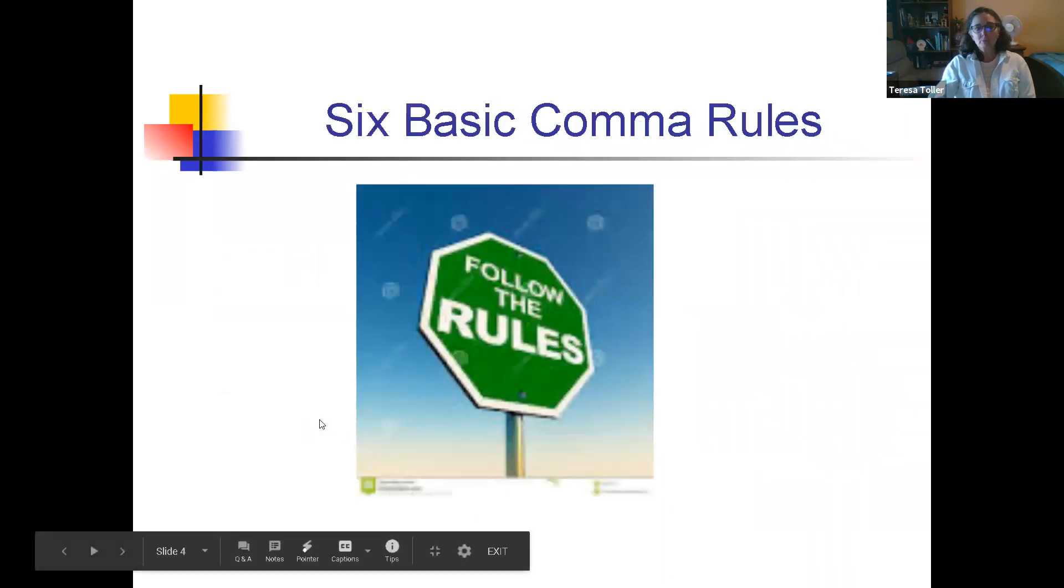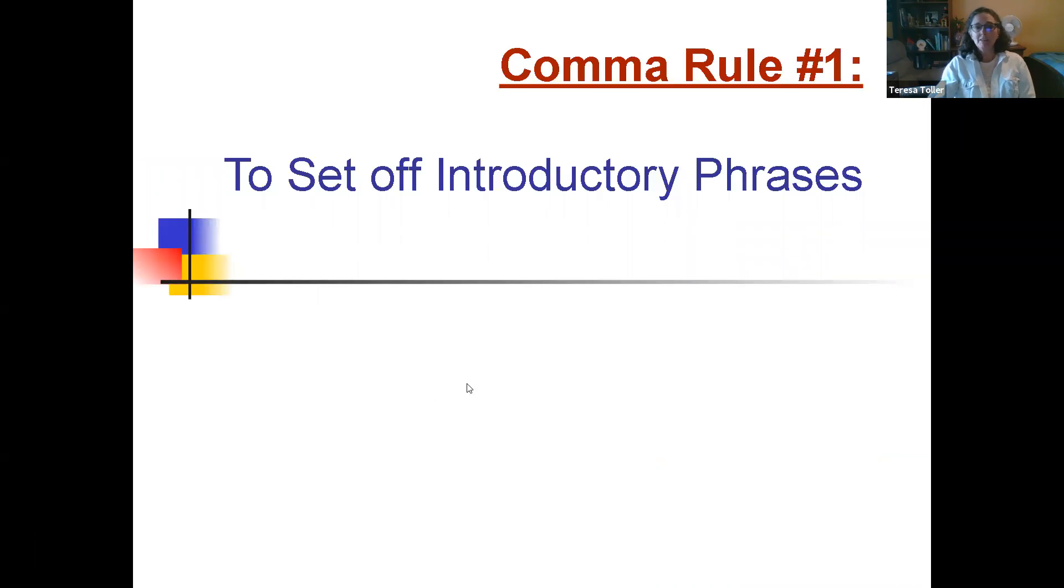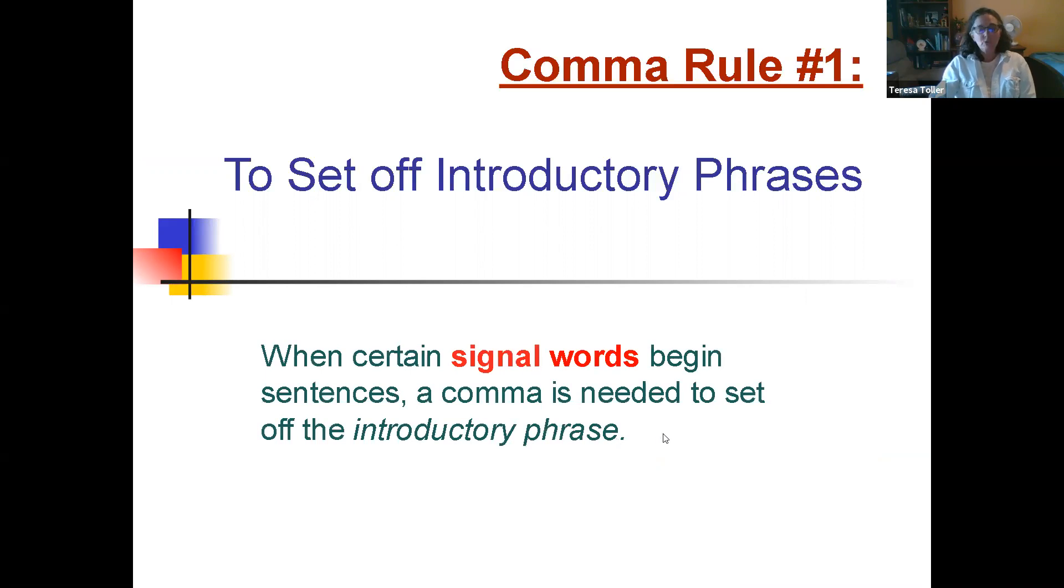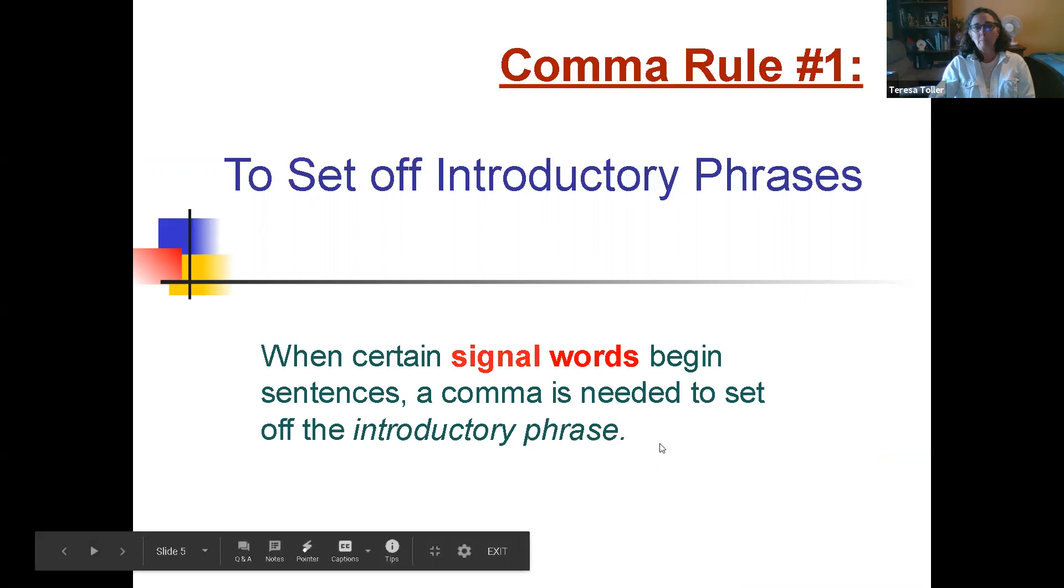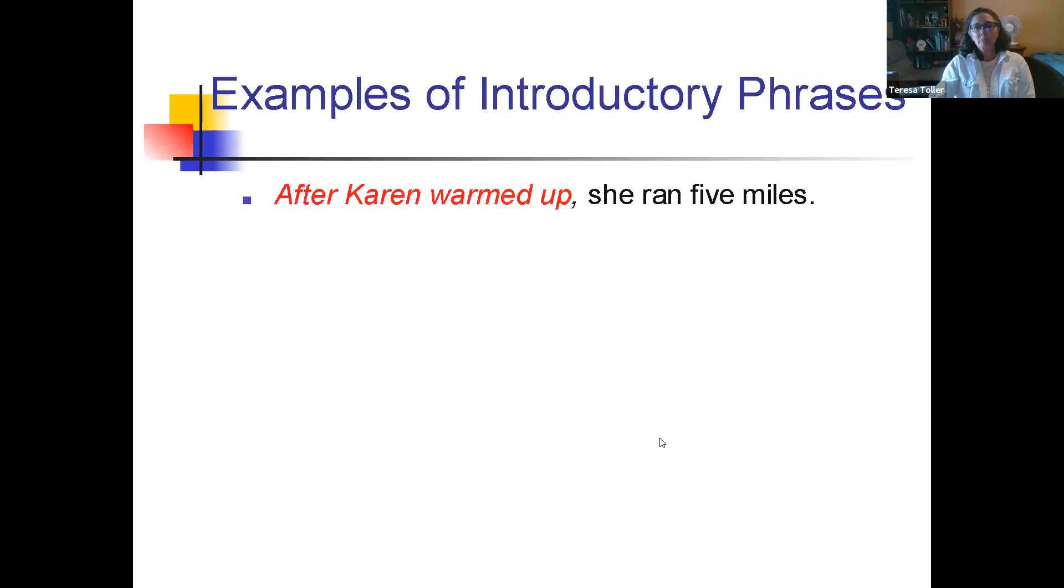So there are six basic comma rules. Rule number one is set off introductory phrases. There are certain signal words that you can key into that would tell you that there is an introductory phrase and that you would need a comma. Examples. After Karen warmed up, she ran five miles. After is your key word right there.